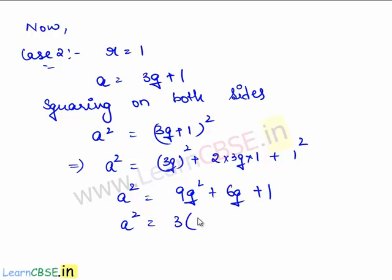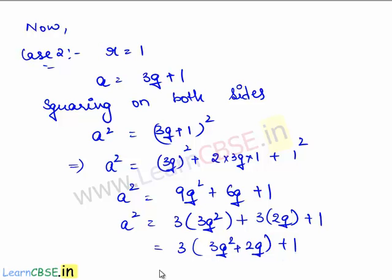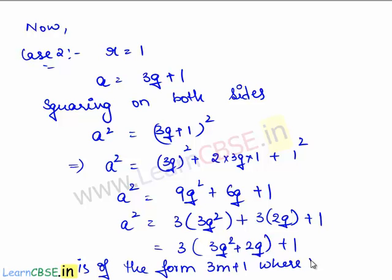9q squared can be written as 3 times 3q squared, and 6q can be written as 3 times 2q. Since 3 is a common factor, we bring it out and are left with 3 times (3q squared plus 2q) plus 1. So this is of the form 3m plus 1, where m equals 3q squared plus 2q.